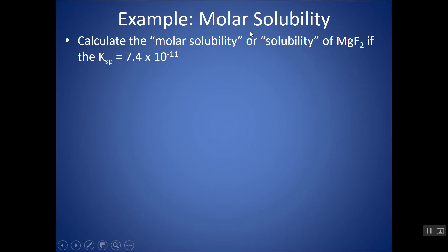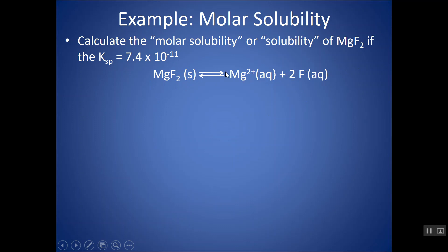Another type of problem is the exact opposite: they give you the KSP and ask for the molar solubility of MgF₂ — that's just the concentration of MgF₂ in aqueous solution once you've reached equilibrium. Whenever you see KSP, write the reaction with the ionic compound as a solid on the left breaking up into its constituent aqueous ions on the right; there's undissolved MgF₂ at the bottom in equilibrium with its ions, some dissolving and some recrystallizing. The MgF₂ solid drops out of the equilibrium expression because its concentration doesn't change over time — you might make more or less mass, but the volume changes proportionately.